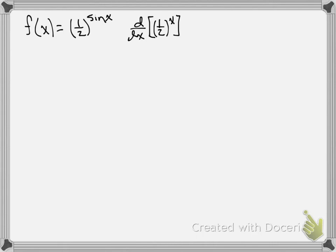So if I were to just take the derivative of 1 half to the x, this would be 1 half to the x times natural log of 1 half. So you have to multiply by the ln of the base if the base is something other than e. That's just our reminder there.